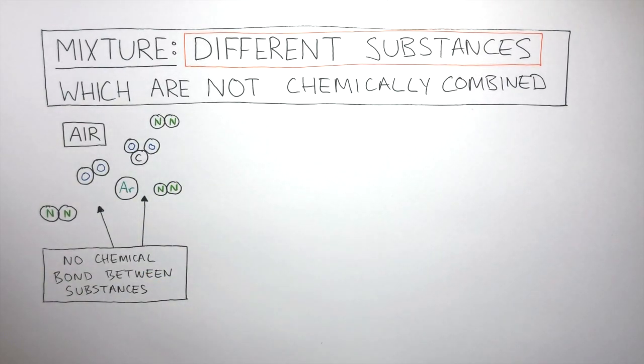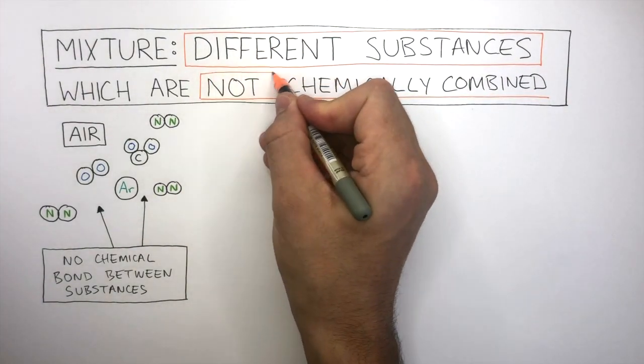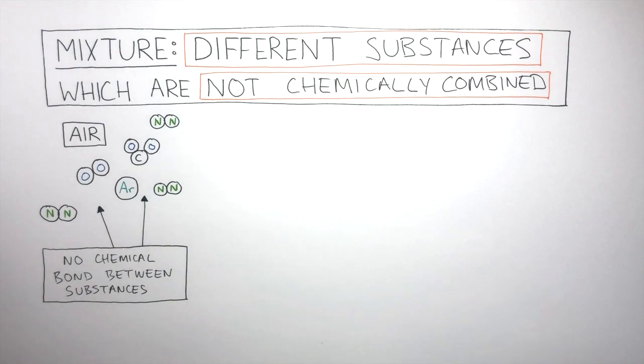So to tell if something is a mixture, just ask yourself these questions. Are there different substances and are they not chemically combined? If your answer is yes to both questions, you have a mixture.